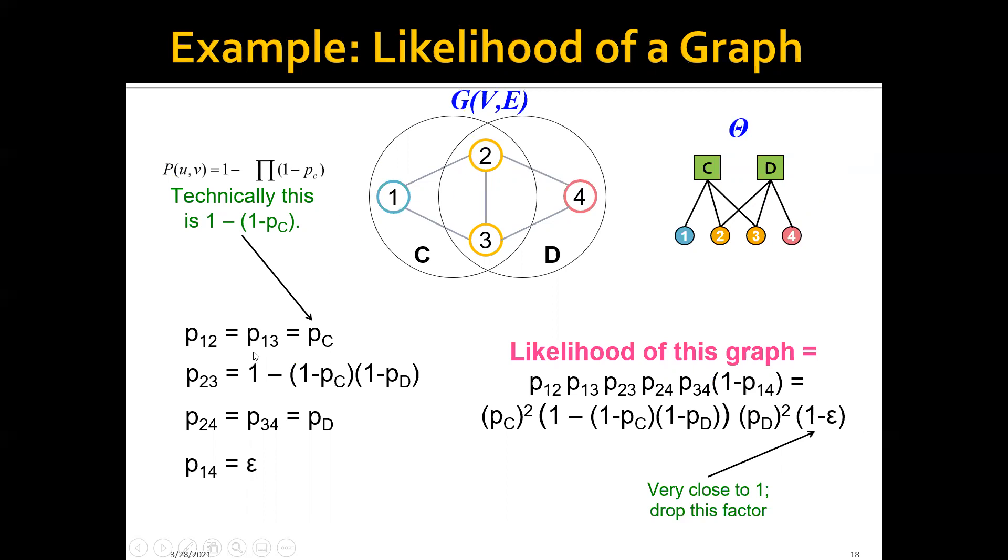And we can do the same for P(1,3), which is the probability that there is an edge between 1 and 3.